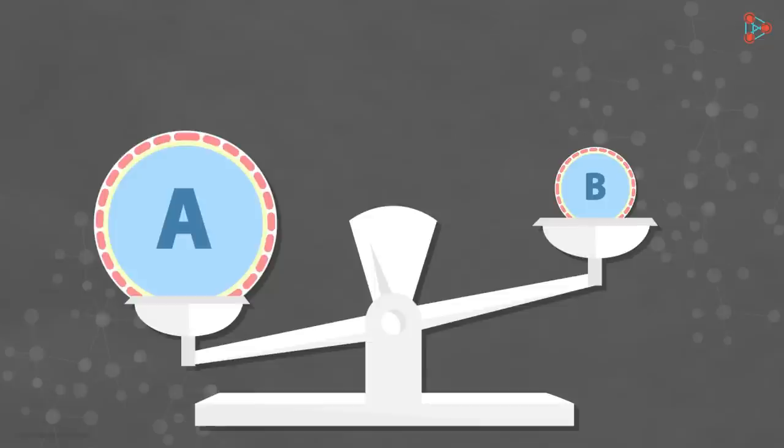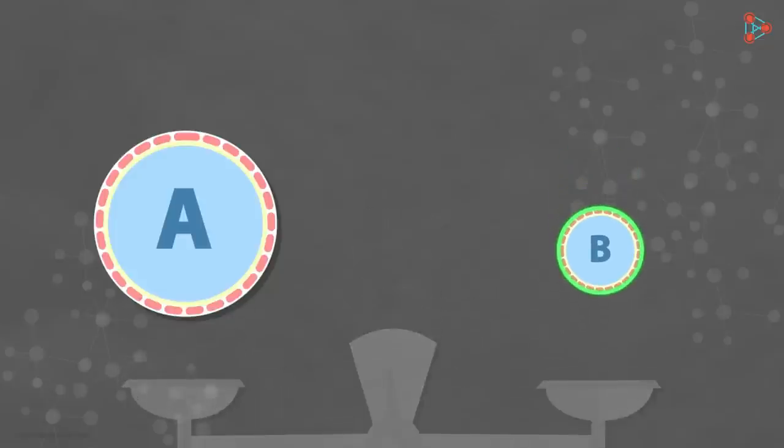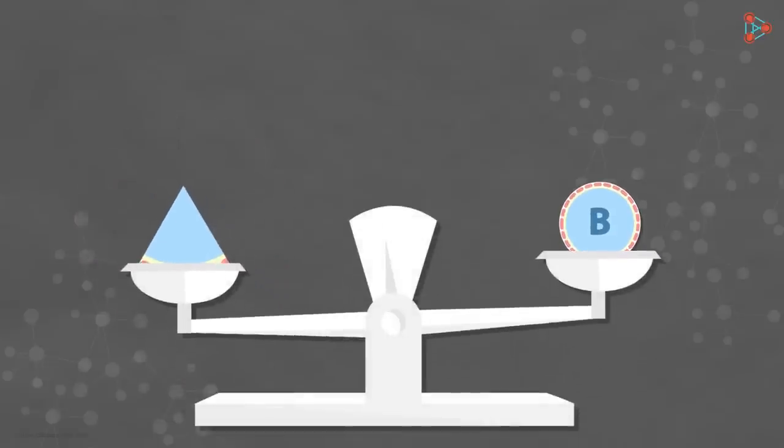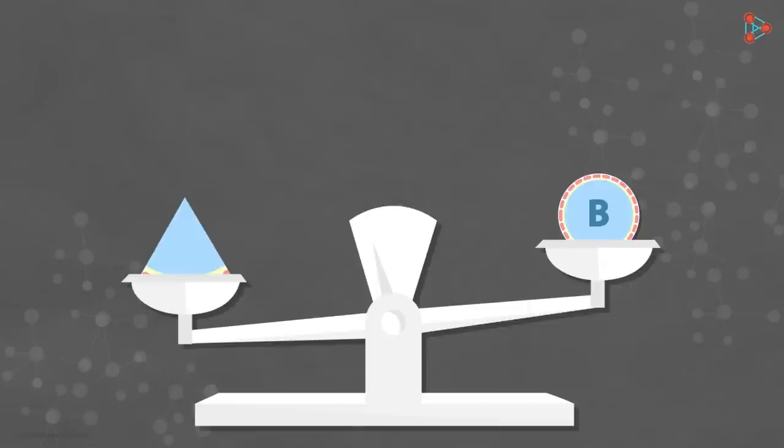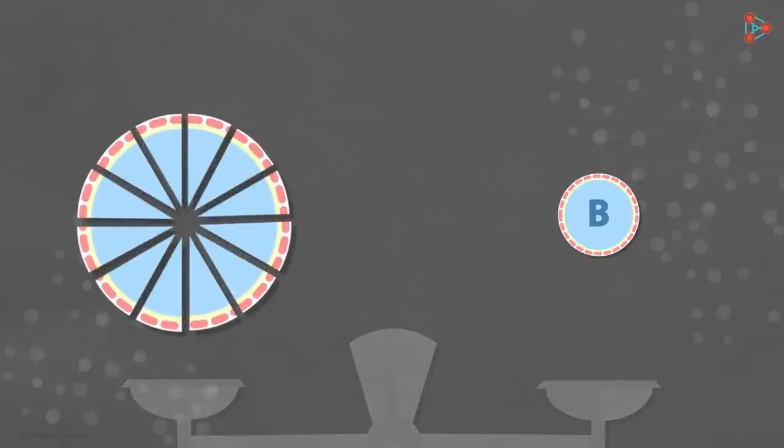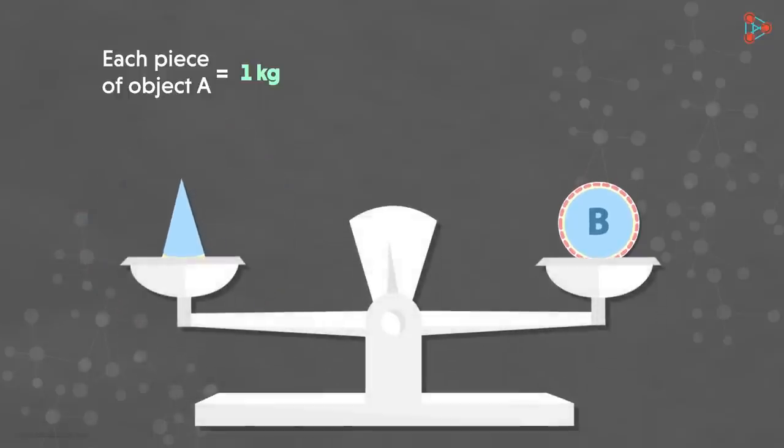Now if we want to find the weight of B, we will need something smaller to compare it to. So let's say we cut object A into 6 equal pieces. And now we compare the weight of object B with one piece. We see that this piece is still heavier than object B. This probably tells us that we need a smaller piece for comparison. So let's assume we cut object A into 12 equal pieces, which means each piece weighs 1 kilogram. And now when we place them on either side of the balance, we see that it's in equilibrium.